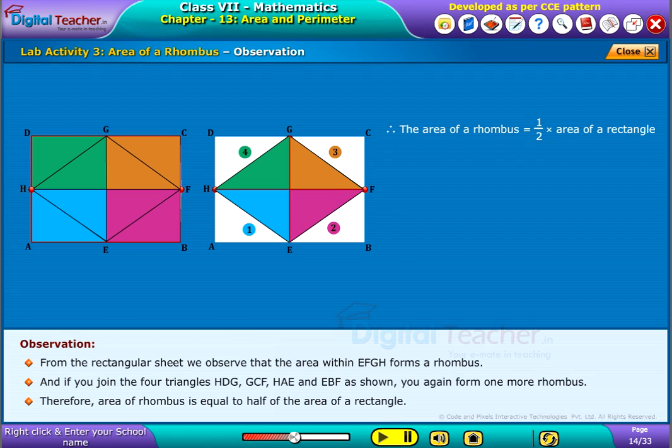Therefore, area of rhombus is equal to half of the area of a rectangle.